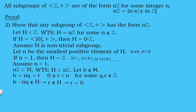Since h minus n times q equals r, we can say that r is actually in our set H. From this we can say that r must equal 0, because we assumed n to be the smallest positive element in our set H. So the only possibility for r is that it equals 0, since it couldn't be any other positive integer and still be less than n. Now that we know r equals 0, we plug that in and get that h equals n times q, which is clearly an integer multiple of n. So that tells us that H is equal to the set of integer multiples of n. This proves that any subgroup of the integers must have this form, and that concludes our proof.